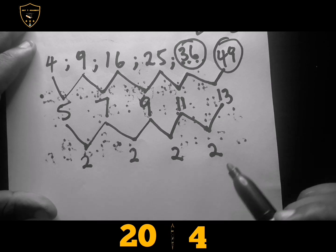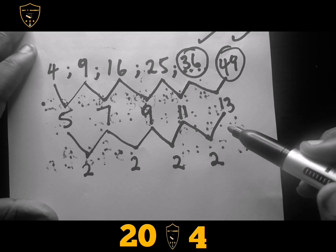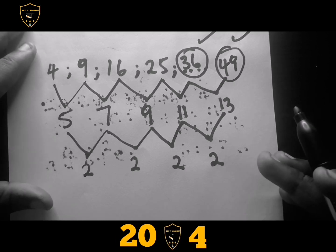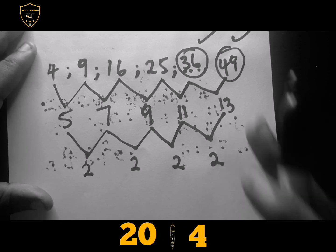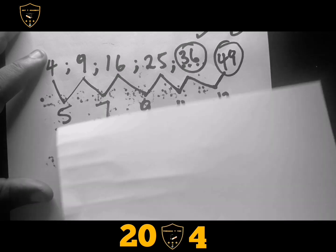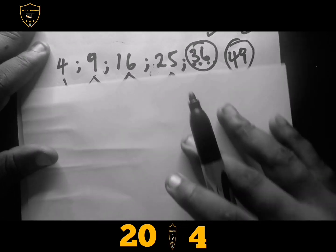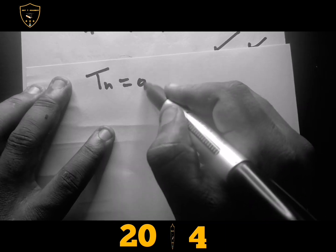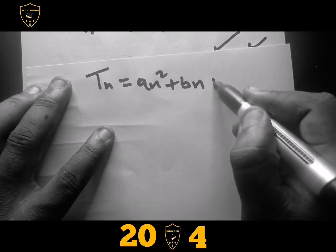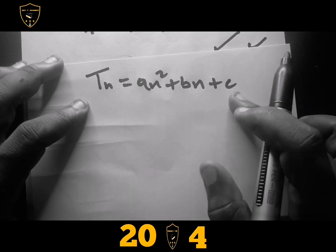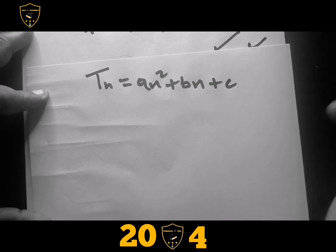Now let's check the second sequence. Like I said, we are going to use this to find the end term or general formula. How do we get this done? We need to remember the general formula we are going to use: Tn equals an squared plus bn plus c. We have this format and all we need are the values of a, b, and c.